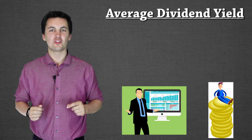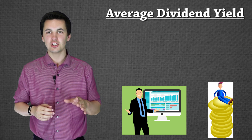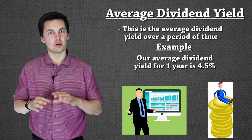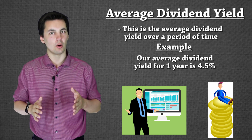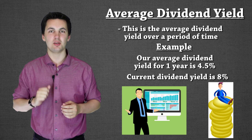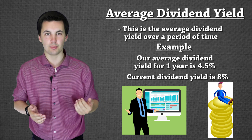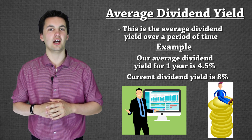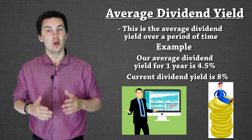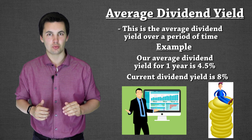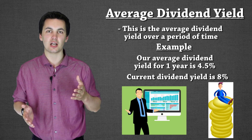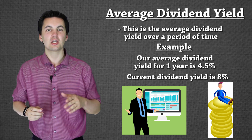One way we can see if a stock is currently undervalued or overvalued is by looking at the average dividend yield. Let's say the average dividend yield for this stock over the past year is 4.5%. If the current dividend yield is 8%, we could say we might have a really good deal — they're way above their average, so they might be undervalued and we should buy. On the other hand, if the current yield is only 1.5% but the average is 4%, we might wait for the stock price to come down so the yield rises before purchasing.